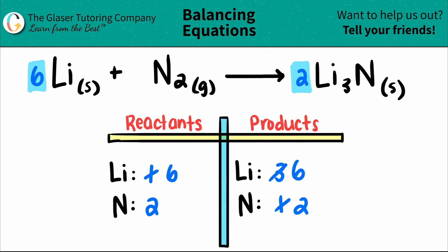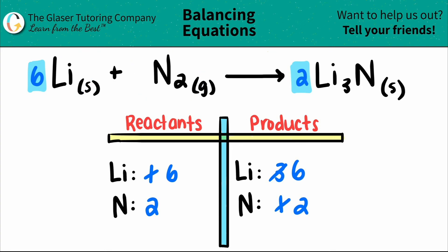So the balanced equation is six lithiums plus N2, which will produce two Li3N. I hope this video helped — if it did, press the like button and subscribe to the channel. Thank you so much. Good luck on all your tests and quizzes, and I hope you guys are having a great day. See you soon.